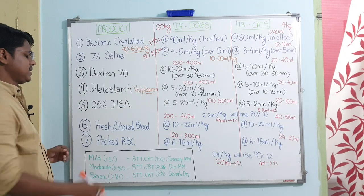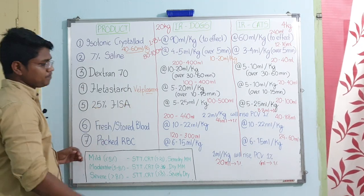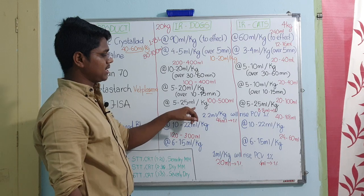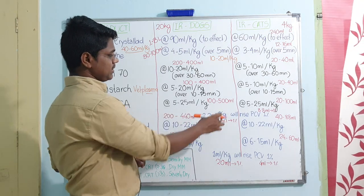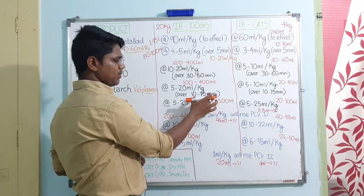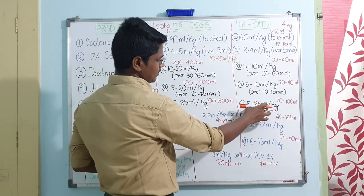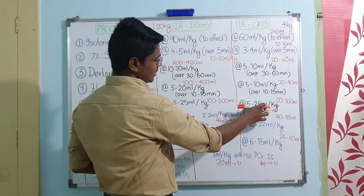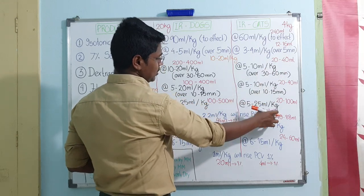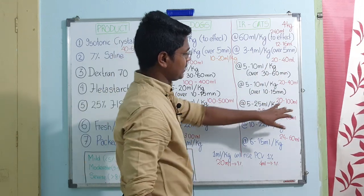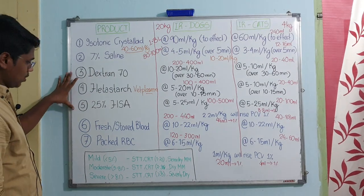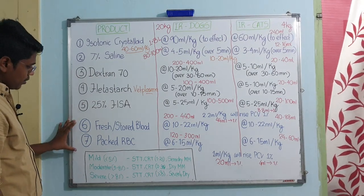25% Human Serum Albumin (HSA): dose rate is 5 to 25 ml per kg body weight. For a 20 kg dog, give 100 to 500 ml over 10 to 15 minutes. For cats, dose rate is 5 to 25 ml per kg; for a 4 kg cat, 20 to 100 ml over 10 to 15 minutes.